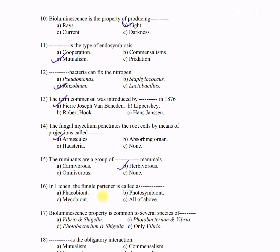Question 16: In lichen, the fungal partner is also called — A) phycobiont, B) photosymbiont, C) mycobiont, D) all of the above. The fungal partner is called mycobiont, so option C is correct. 'Myco' always refers to fungus — for example, the study of fungi is called mycology.